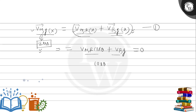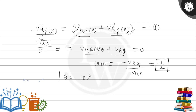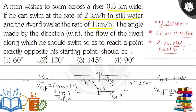That means cosθ = −vrg / vmr, which equals −1/2. Therefore theta must be equal to 120 degrees. So he swims in a direction making an angle of 120 degrees with the direction of river flow, and that is the final answer. Option number 2 is the correct answer. I hope I answered the query — all the best.